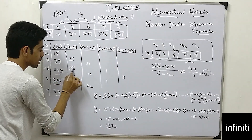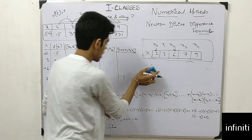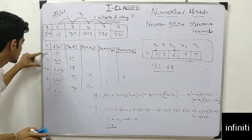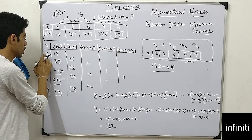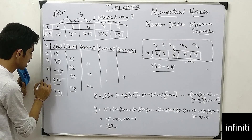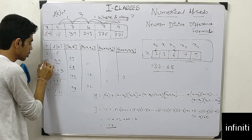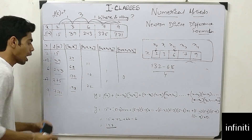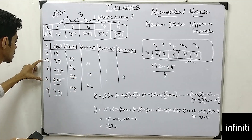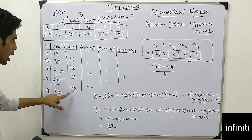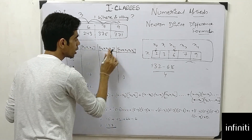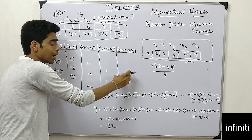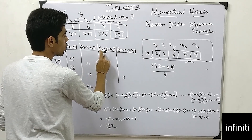Next, I subtract 68 from 132 and shift the pointer one place — previously it was on x=6, now it shifts to x=7, and previously on x=2, now on x=3. So 7 minus 3 is 4, giving an answer of 16. Then 192 minus 132 divided by 9 minus 6 gives 22. I continue computing until I get a single number or zero in the final column.